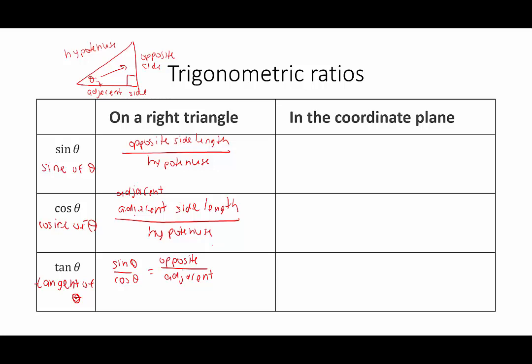One key takeaway from trigonometry is the mnemonic SOHCAHTOA. SOH means sine equals opposite over hypotenuse. CAH means cosine equals adjacent over hypotenuse. TOA means tangent equals opposite over adjacent. We use SOHCAHTOA to help us remember these right triangle ratios for sine, cosine, and tangent.